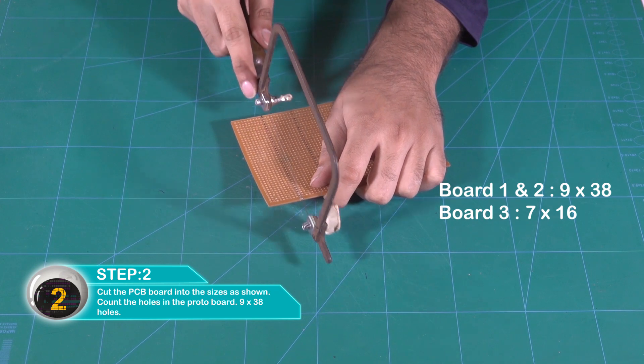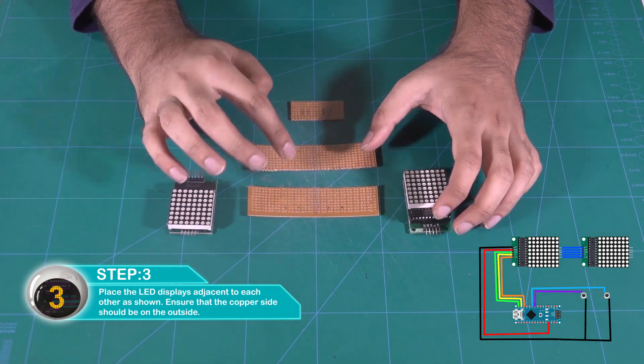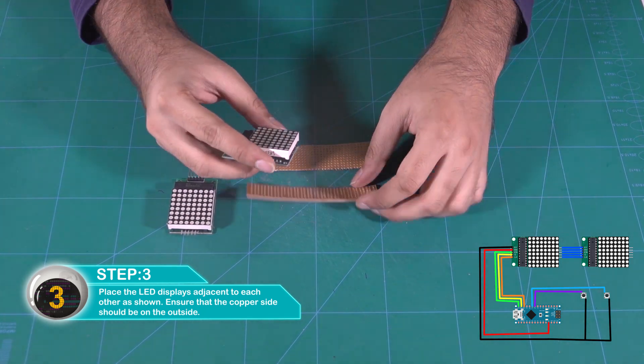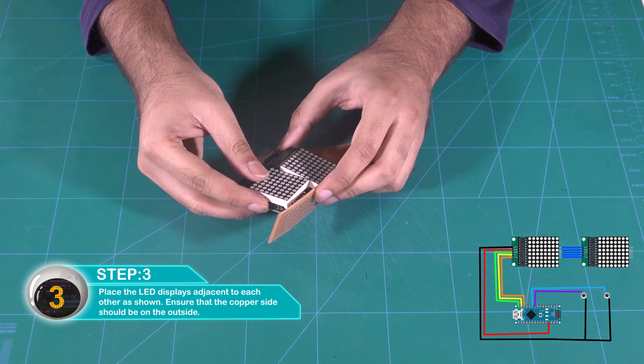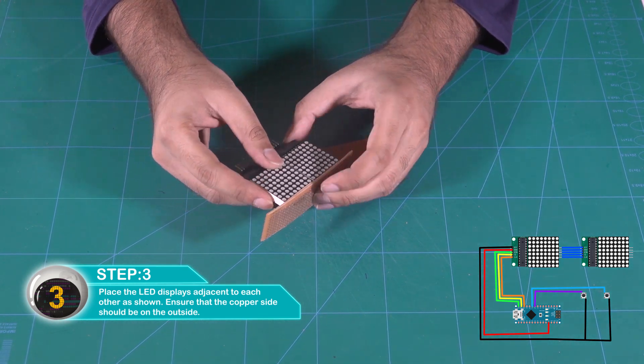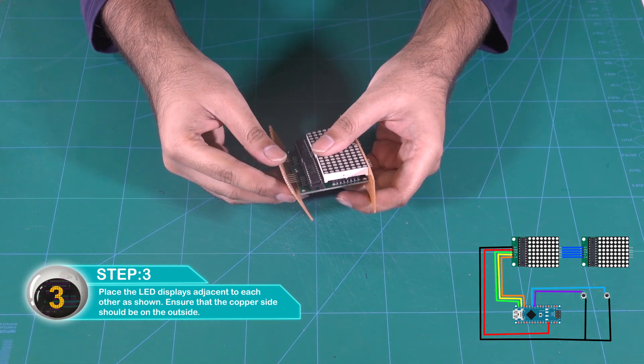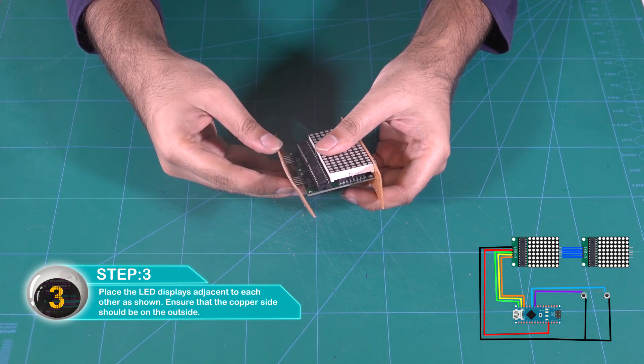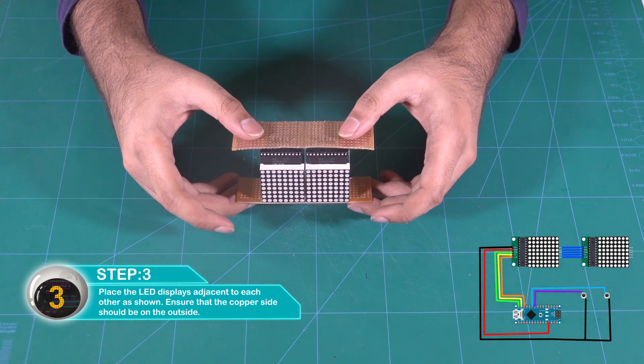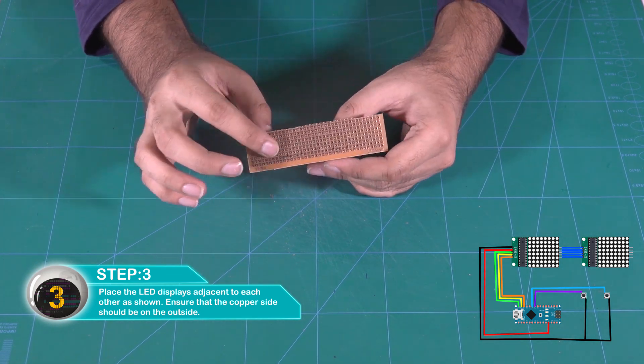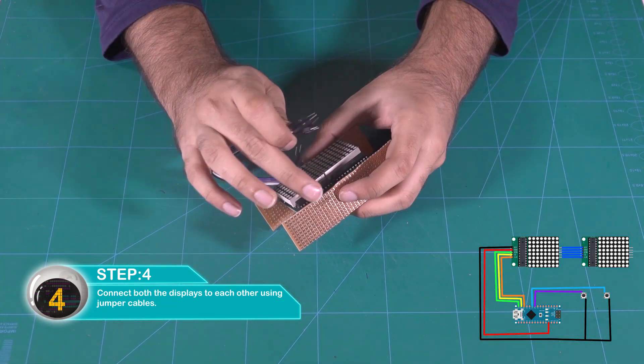Cut rectangles in the proto board as shown in the template. Place the LED displays side by side. Make sure the copper side that has the pins is facing downward. Connect both displays using jumper cables as shown.